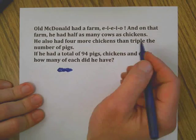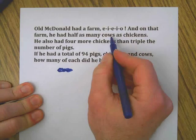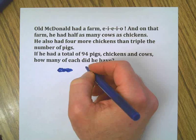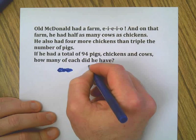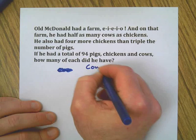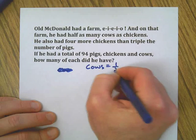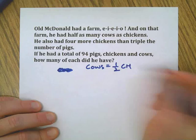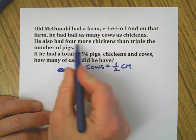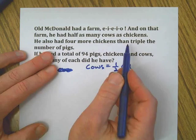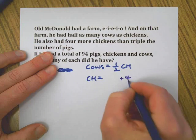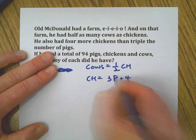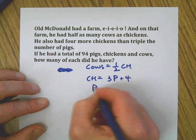Hello, back at it. He had half as many cows as chickens, so CO = 1/2 CH. He had four more chickens than triple the number of pigs, so chickens equals 3P + 4. And of course he had pigs.